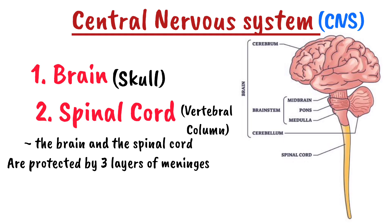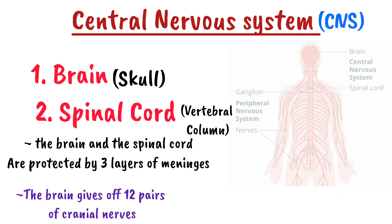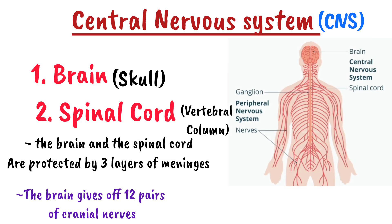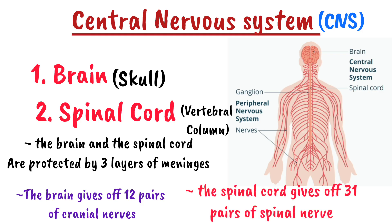The CNS communicates with the peripheral nervous system, the PNS, through the cranial and spinal nerves. The brain gives off 12 pairs of cranial nerves that control the neck, the head, and certain organs, while the spinal cord gives off 31 pairs of spinal nerves that control the rest of the body.